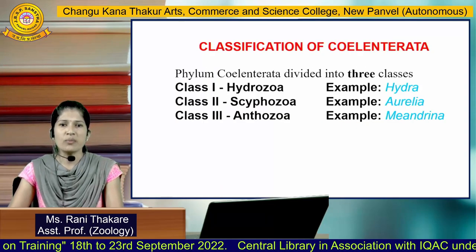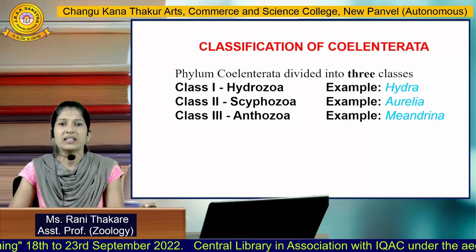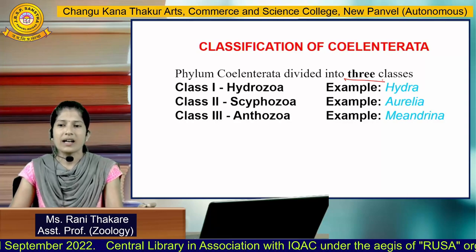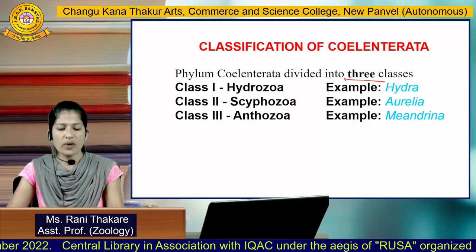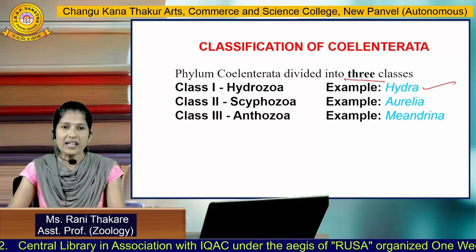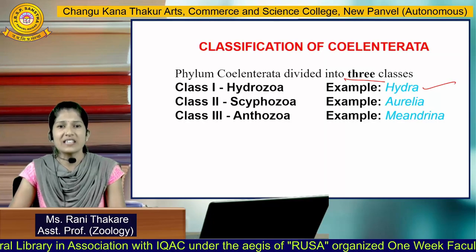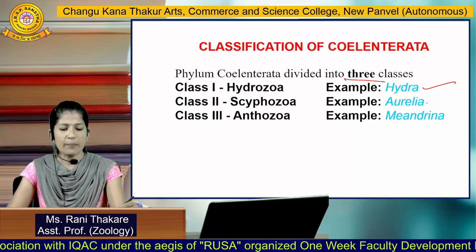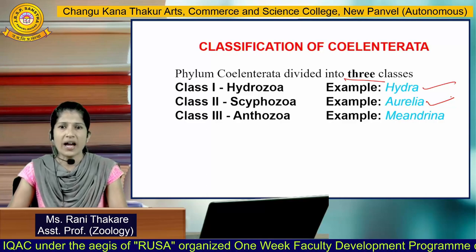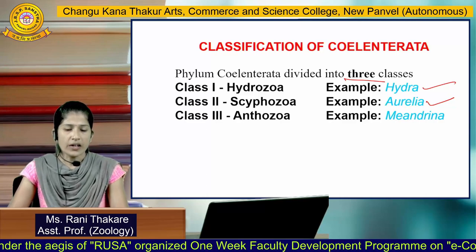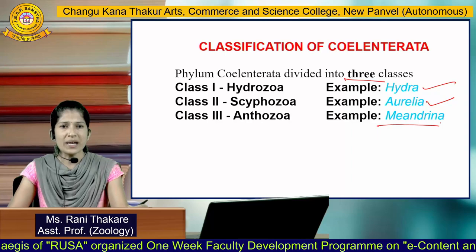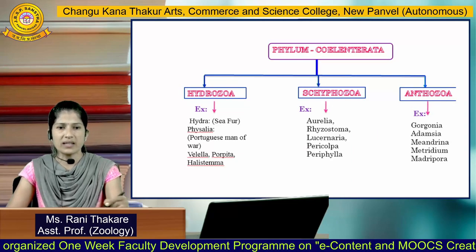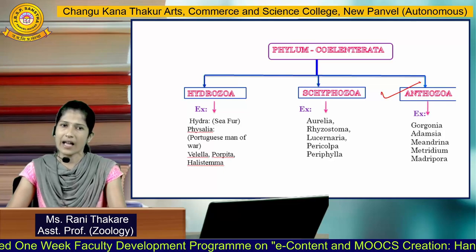Based on their external skeleton, Coelenterata are divided into three classes. Class 1, Hydrozoa, with the example Hydra, commonly known as sea fur. Class 2, Scyphozoa, with the example Aurelia, commonly known as jellyfish. Class 3, Anthozoa, with the example Meandrina, commonly known as brain coral — so corals are placed under class Anthozoa.